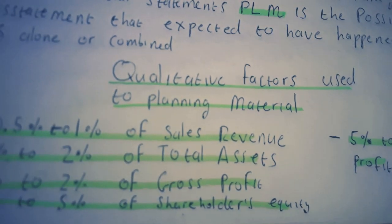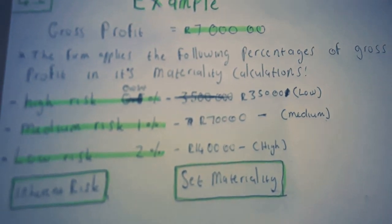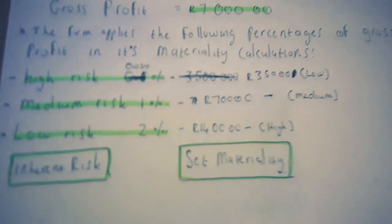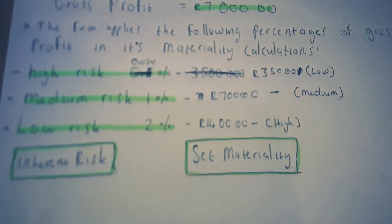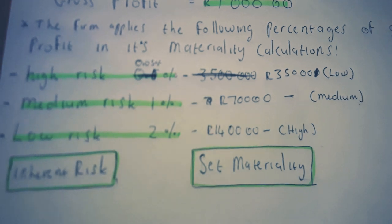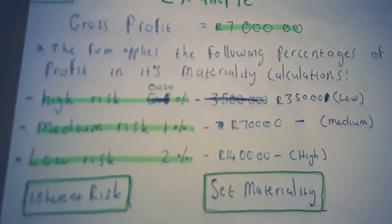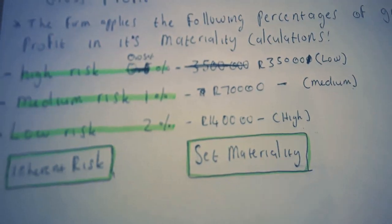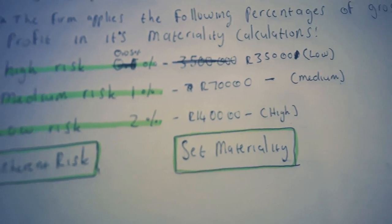As an example, let's say we have a gross profit of seven million rands. The firm applies the relevant percentages in its gross profit materiality calculations. Something else to note is that the inherent risk and the materiality level have an inverse relationship, meaning when one is high the other will be low, and vice versa. For example, a high inherent risk corresponds to a low materiality percentage such as 0.05%, a medium risk to 1% giving a figure of seventy thousand, and low risk to a figure of forty thousand.